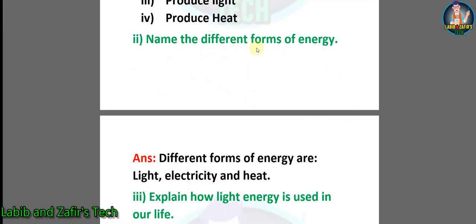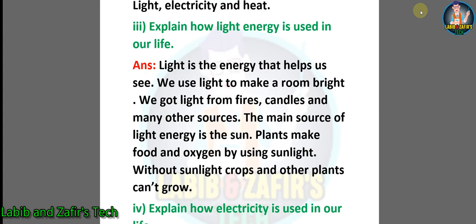Our second question: name the different forms of energy. Answer: different forms of energy are light, electricity, and heat. Number three: explain how light energy is used in our life.